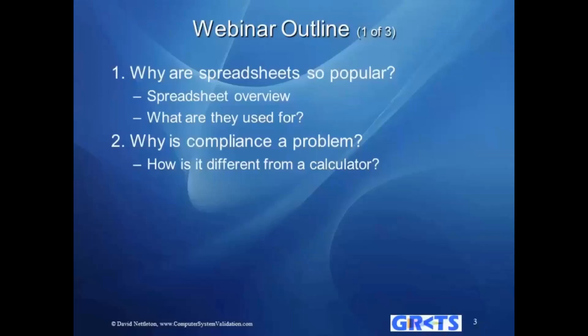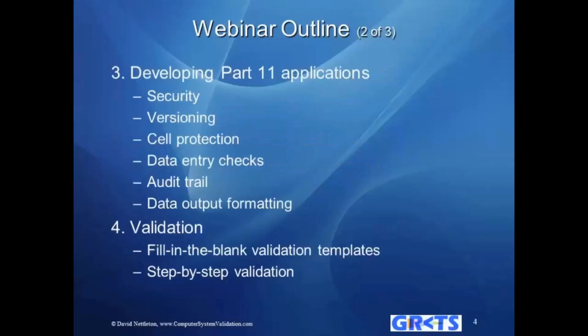We explain how an Excel application is much different than a calculator. Then we go into how to actually develop the Part 11 application. We talk about the security features you need to turn on in Excel — every version from 1997 through today has the same features and they're all backwards compatible. We talk about cell protection so people can't change your formulas, data entry checks so we know we're getting the right type of data, and the built-in audit trails. Most people don't know that Excel has a full audit trail built in — you just turn it on with a series of mouse clicks. It's called track changes, but it is a beautifully illustrated audit trail.